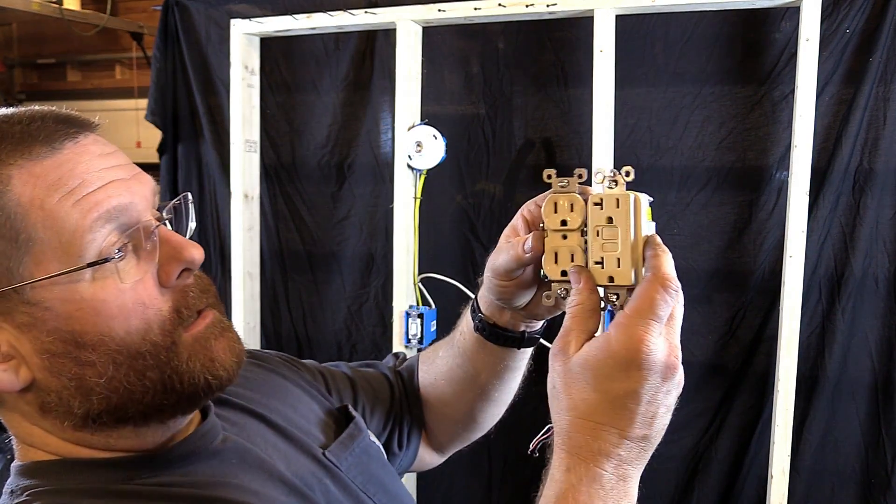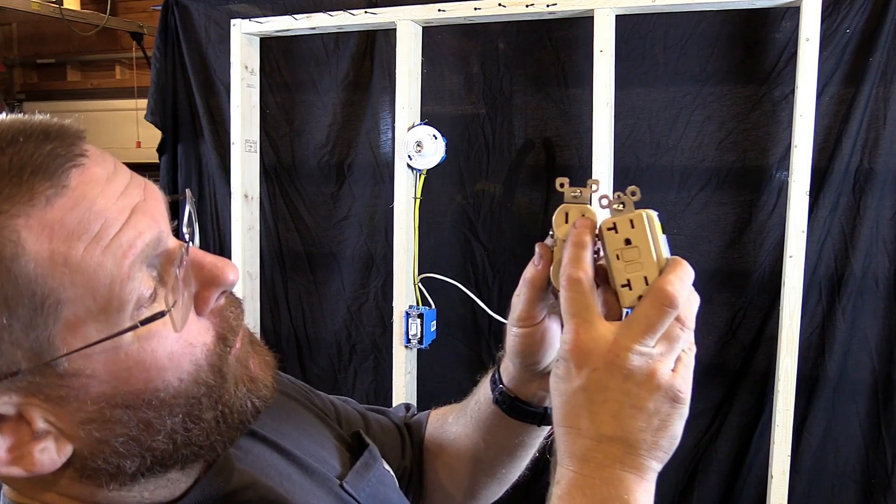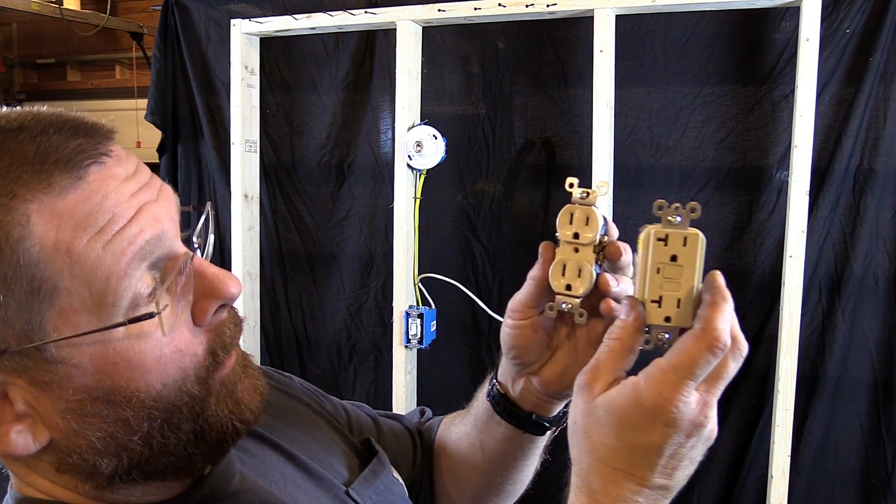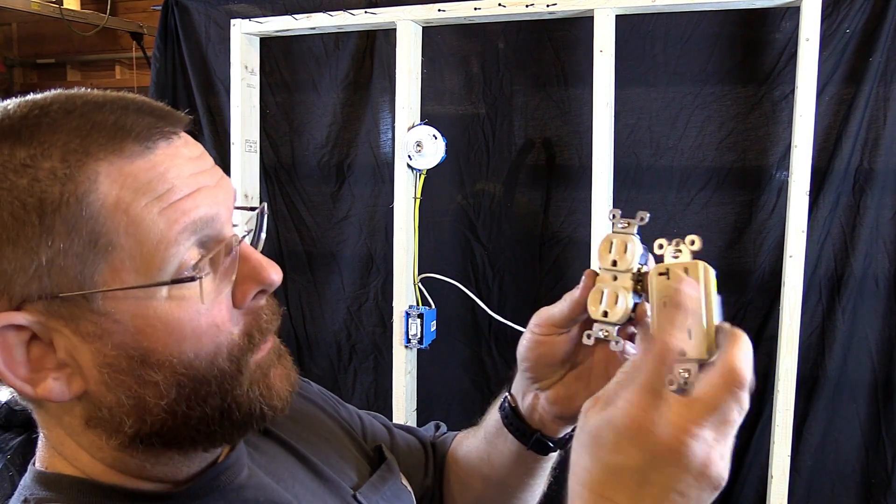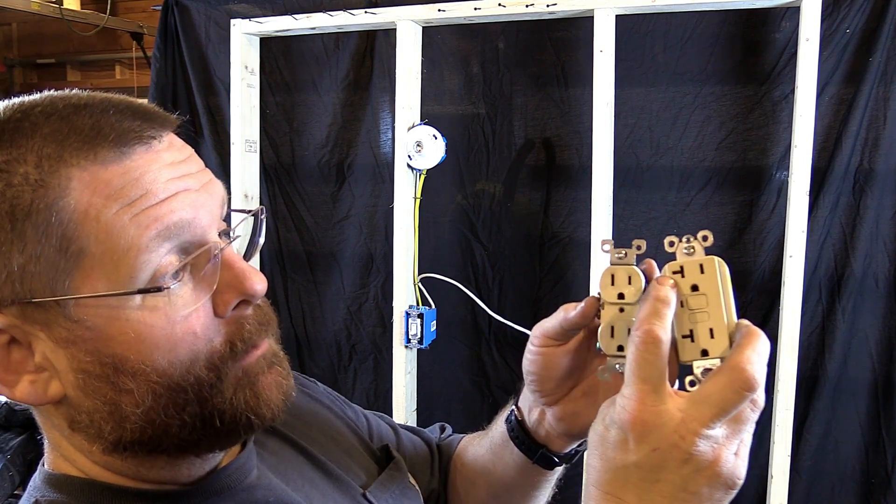Now this is not a GFI - this is a regular receptacle, but you see the difference. This one is a 15 amp and it's just hot, neutral, ground. This one's got the little slot on it. So that's how you can always tell if it's 20 amp or not.